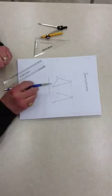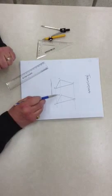And there we've successfully translated triangle ABC to A prime, B prime, C prime.